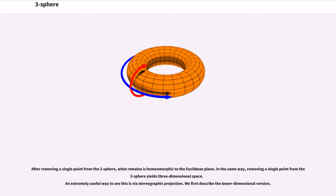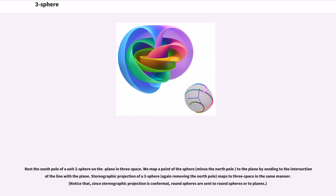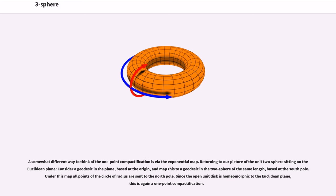moving the pair of discs to become northern and southern hemispheres. After removing a single point from the two-sphere, what remains is homeomorphic to the Euclidean plane. In the same way, removing a single point from the three-sphere yields three-dimensional space. An extremely useful way to see this is via stereographic projection. We first describe the lower dimensional version. Rest the south pole of the unit two-sphere on the plane in three-space. We map a point of the sphere to the plane by sending to the intersection of the line with the plane. Stereographic projection of a three-sphere maps to three-space in the same manner.